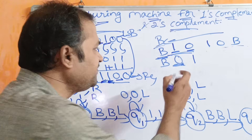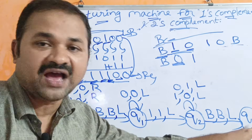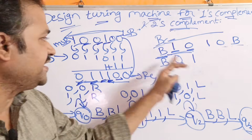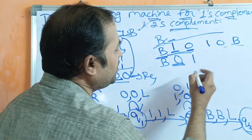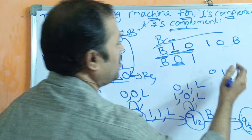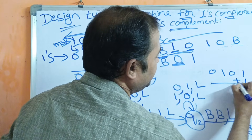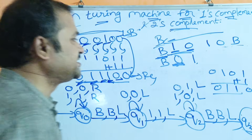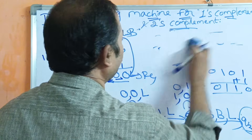Now we are at q3 state and we can stop the diagram. We started at the most significant bit and ended at the most significant bit. The 2's complement of 1 0 1 0: first find 1's complement → 0 1 0 1, then add 1: 1+1 = 0 carry 1, 0+1 = 1, so the result is 0 1 1 0.